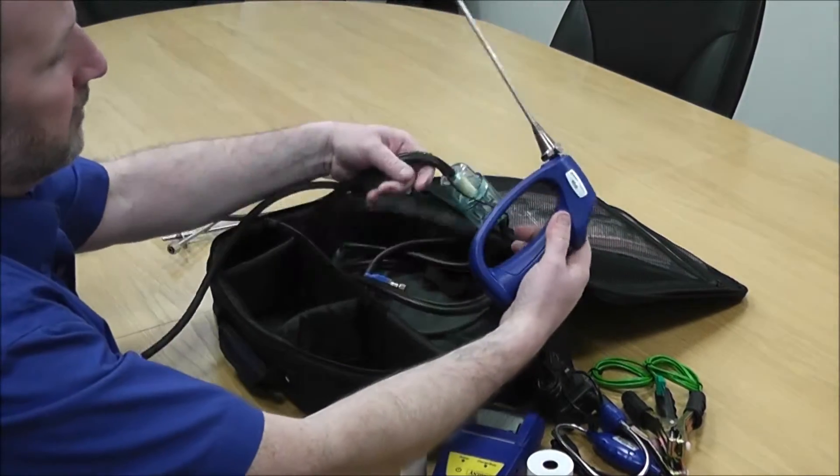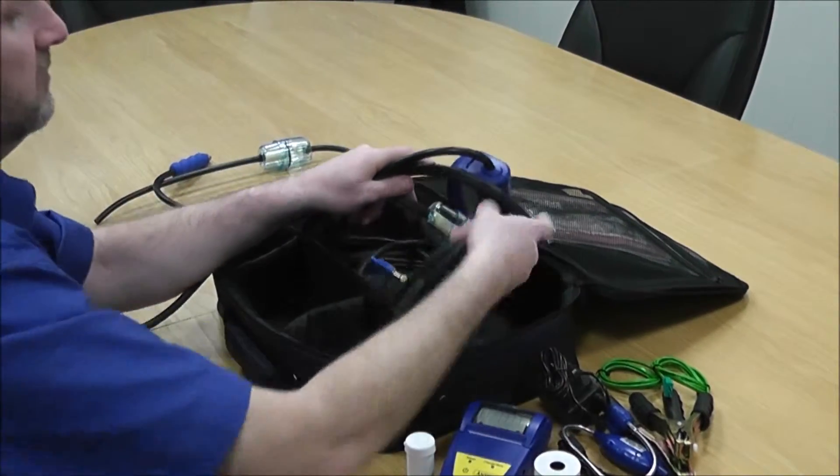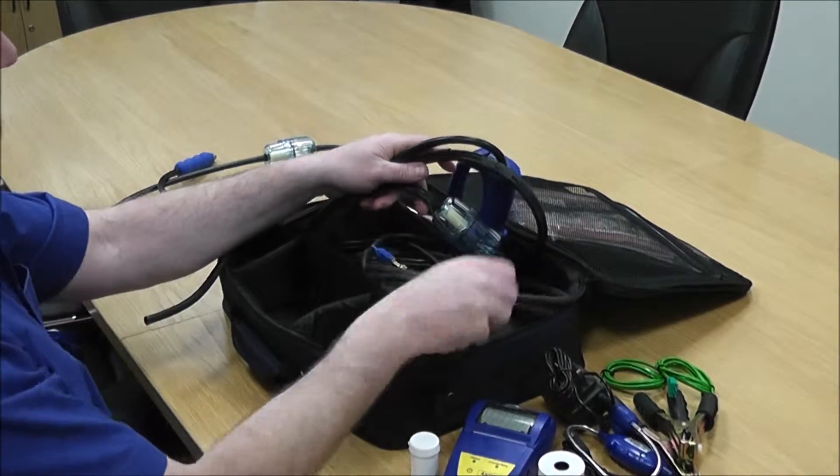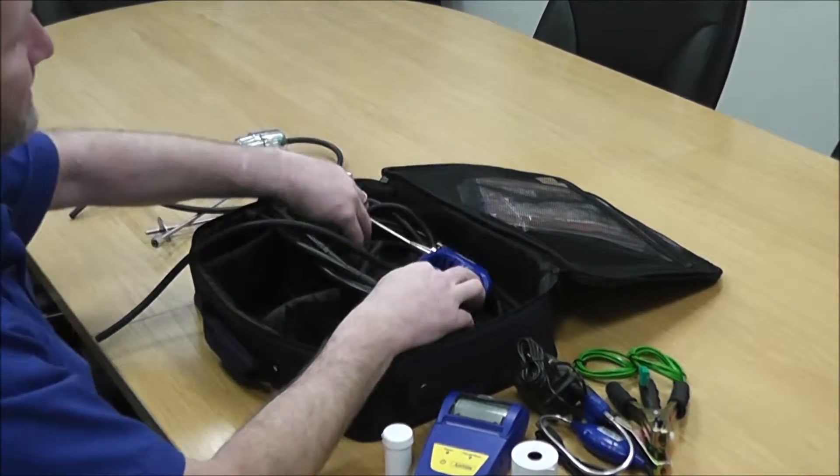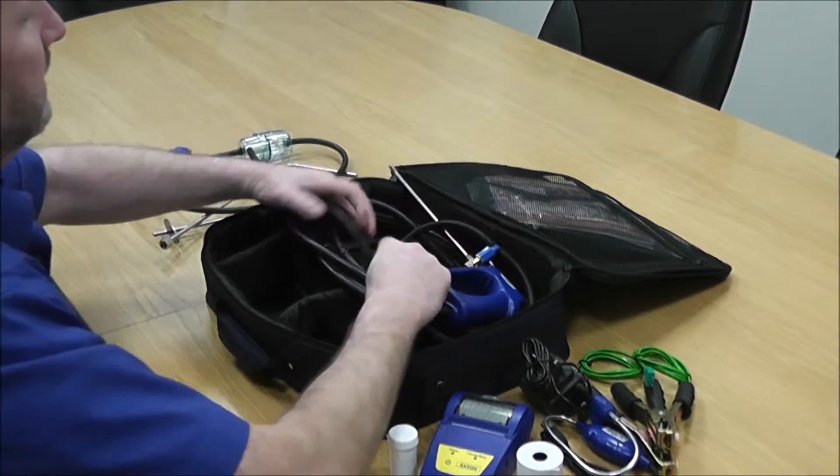As I said before, you get a flue probe. You also get two other lengths of pressure hose. Standard pressure hose in there as well as the pressure relief valve that you get in there.